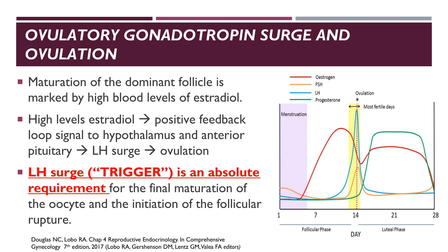Maturation of the dominant follicle is marked by high blood levels of estradiol. When a threshold of estradiol is reached, estradiol activates the positive feedback loop, signaling to the hypothalamus and anterior pituitary gland that the follicle is ready for ovulation and that a large gonadotropin surge — both FSH and LH — is to be released. During the ovulatory surge, LH levels increase tenfold over two to three days, whereas FSH levels increase about fourfold. This gonadotropin surge is an absolute requirement for the final maturation of the oocyte and the initiation of follicle rupture; the LH surge is also called the trigger of ovulation.